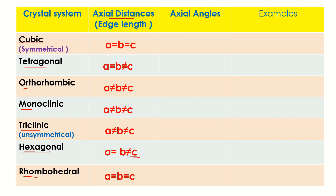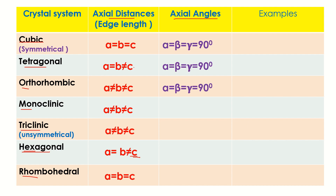Now for axial angles: the first three crystal systems — cubic, tetragonal, and orthorhombic — have all angles equal to 90°. That means alpha = beta = gamma = 90°.